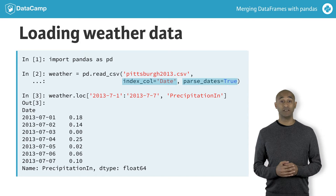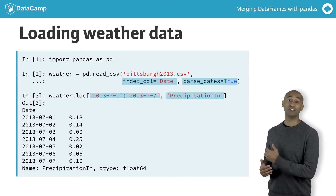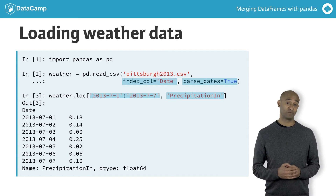With datetime indexes, we can use convenient strings to slice the first week of July from the precipitation in column.